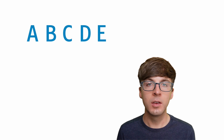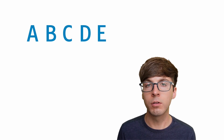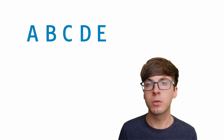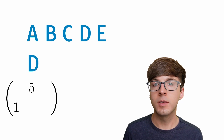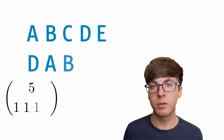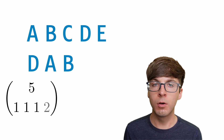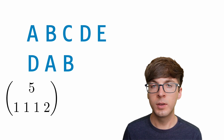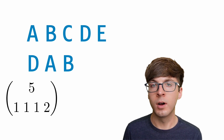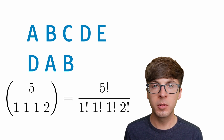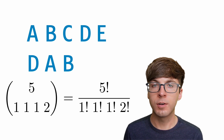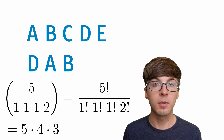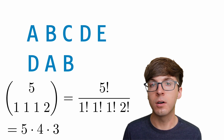Next, let's look at the permutation. We again have letters A through E but only want to order three of them. As a multinomial coefficient: we have five letters, choose one for the first position, one for the second, one for the third, and then choose two to be left out. So we get five choose one, one, one, two. The formula is five factorial over the one factorials and one two factorial, which simplifies to five times four times three — exactly the permutation. So permutations are a special case of the multinomial coefficient.